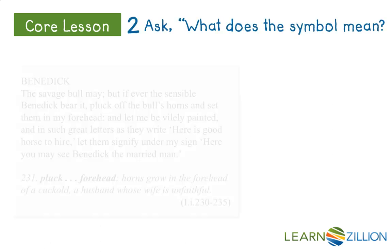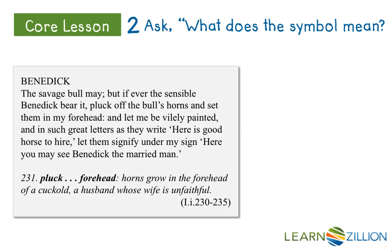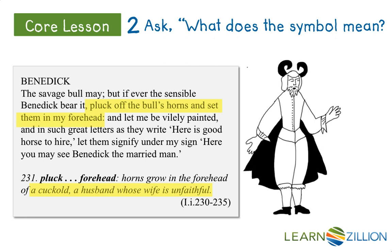When we go back to our first passage and examine it more closely, we notice that Benedict jokes that should he ever be found to bear the yoke, Don Pedro may pluck off the bull's horns and set them in his forehead. When we consult the footnotes, we see that the term cuckold refers to a husband whose wife is unfaithful. The cuckold, portrayed as a man with horns growing out of his head, was used during Shakespeare's time as a symbol for the powerless man.